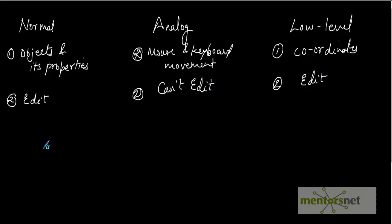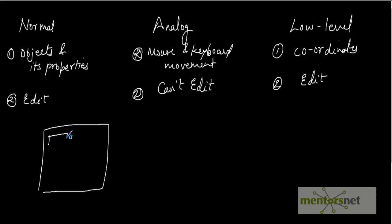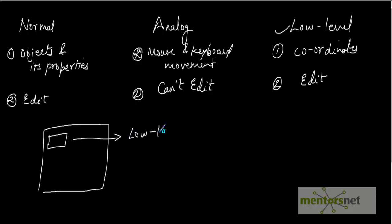Suppose you have an application with a text box and a test case to verify whether the text box appears at the top right corner. You want to check the exact location of the object. In this case, use low level recording, since it verifies the exact location of the edit box.